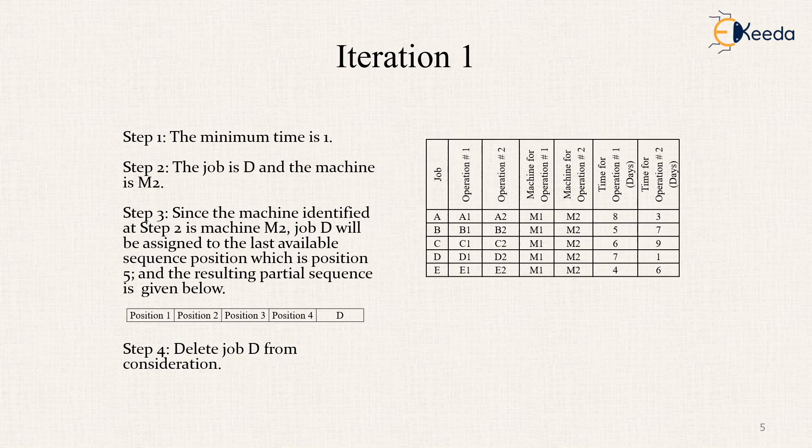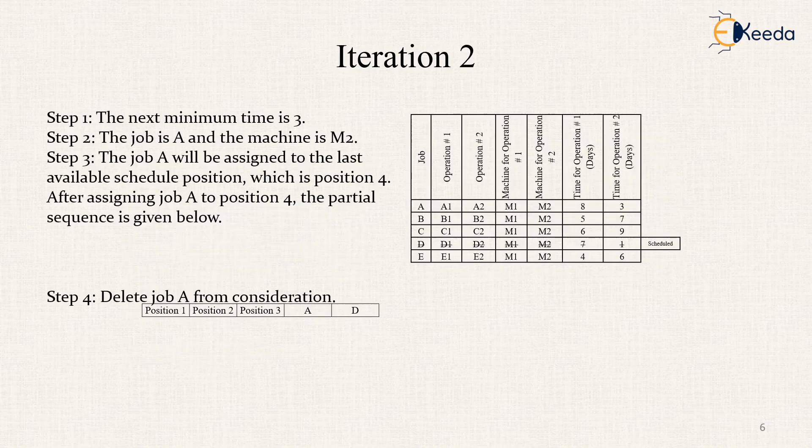Now, we delete job D from the consideration and we take the next minimum time which is 3, which is given in the job A and the machine is M2. The job A will be assigned to the last available scheduled position which is position 4. After assigning job A to position 4 the partial sequence is given as A and D, 1, 2, 3, A and D.